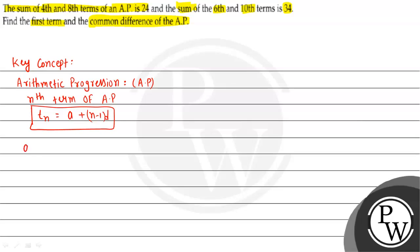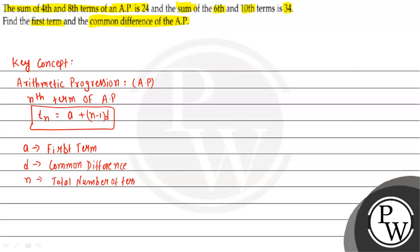Here, A is the first term of the sequence, D is the common difference between two consecutive numbers, and N is the total number of terms. We will use this formula to solve this question.